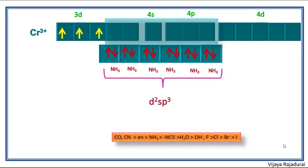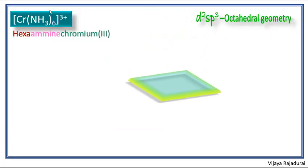And it forms d2sp3 hybridization, so it is also known as inner orbital complex.